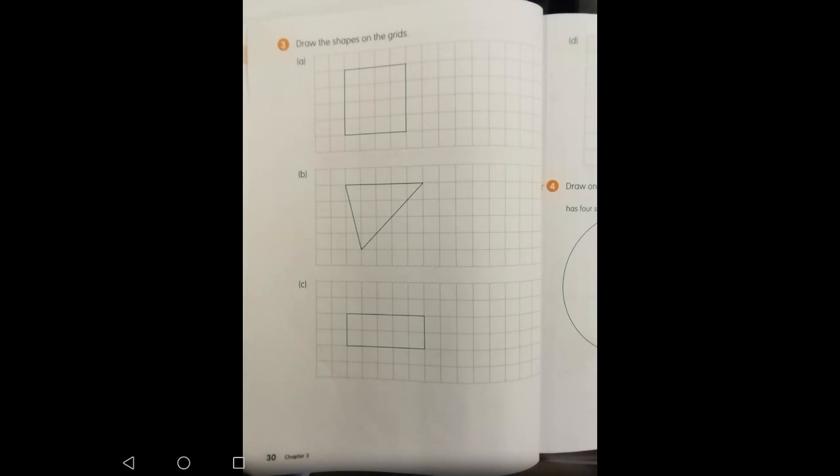In part A we have a square. The most important thing in copying a shape is that you have to copy all the dimensions correctly. Here you have to measure the dimension by the squares and then start copying.